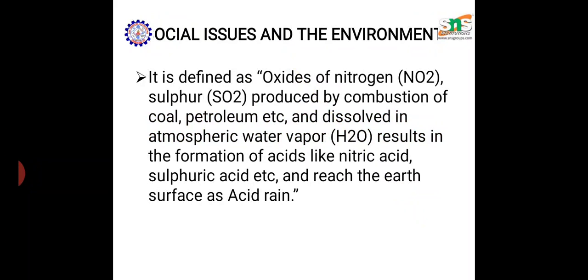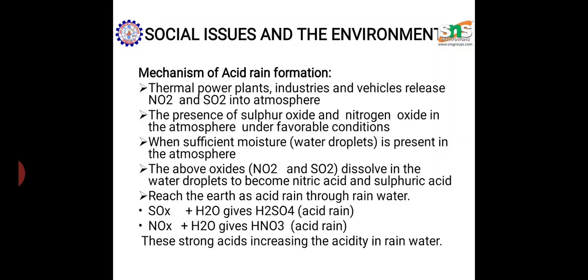Two important oxides are responsible for acid rain: oxides of nitrogen (NO2 or NOx) and oxides of sulfur (SO2). These are mainly produced by the combustion of fossil fuels such as coal and petroleum. These oxides dissolve in rainwater and form nitric acid and sulfuric acid, which reach the earth as acid rain.